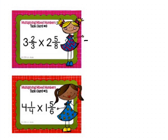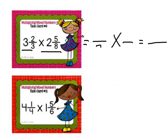Before I start multiplying mixed numbers, I have to convert them to improper fractions. Let's do some exercises. Can I multiply these two mixed numbers directly? No, you can't. What do I have to do first? I have to convert both of them first, then multiply. Keep the same denominator, multiply the whole number by the denominator: 3 times 3 is 9, then add 2 — it's 11.